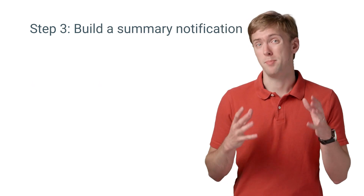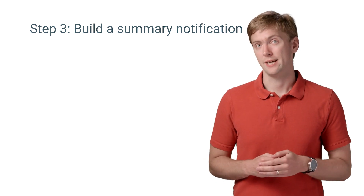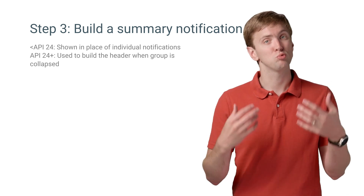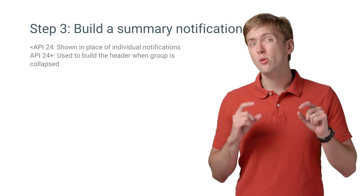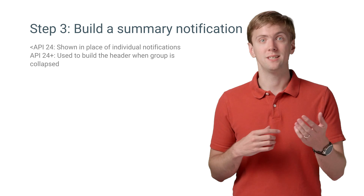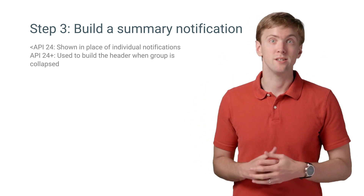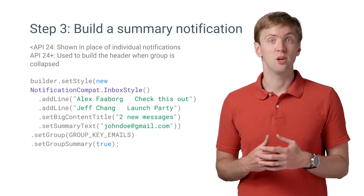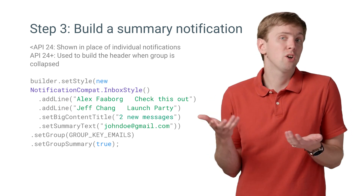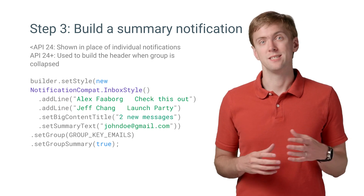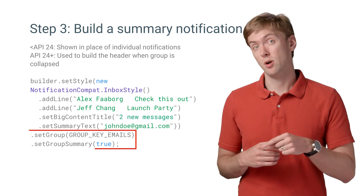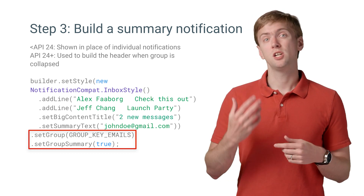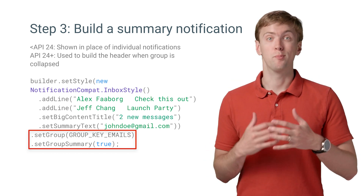There's one other part to bundled notifications: a summary notification. On Marshmallow and lower phones and tablets that don't directly support bundled notifications, only this summary notification will be displayed. So make sure it's also a great notification. The Inbox style is a great candidate for these summary notifications to give users a quick overview of all the notifications they have. Just make sure to call setGroup with that same key, and then call setGroupSummary to true to denote that notification as your summary notification.